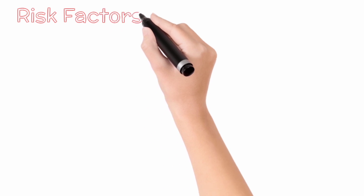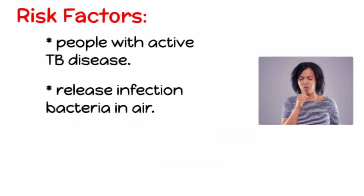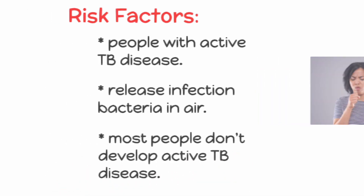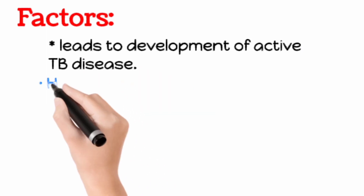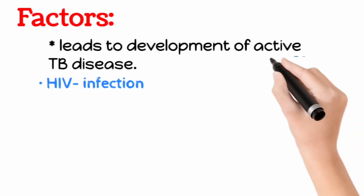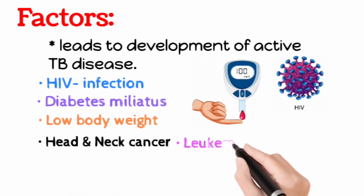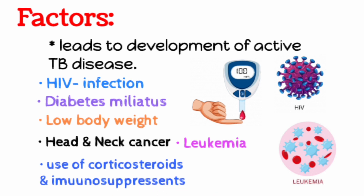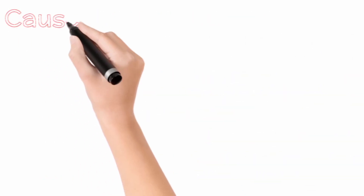You are at risk of TB infection if you are around people with active TB disease who are coughing, which releases bacteria into the air. Most people who are infected with the bacteria that cause TB do not develop active disease. The following factors increase the risk that latent disease will develop into active disease: infection with HIV, diabetes mellitus, low body weight, head or neck cancer, leukemia or Hodgkin's disease, some medical treatments with corticosteroids and immunosuppressants, and silicosis — a respiratory condition caused by inhaling silica dust.